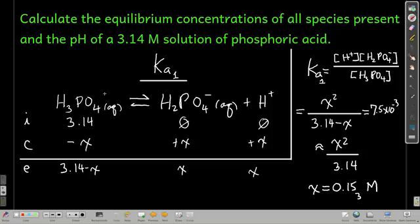So now let's just do a calculation. Let's say we have a 3.14 molar solution of phosphoric acid. That's this right here, H3PO4. And we want to know what the equilibrium concentrations of everything in that solution is, as well as the pH of the solution. pH is the negative log base 10 of the concentration of hydrogen ion.